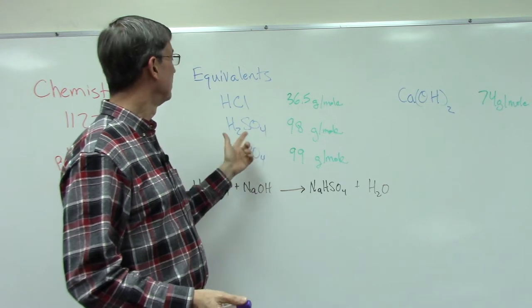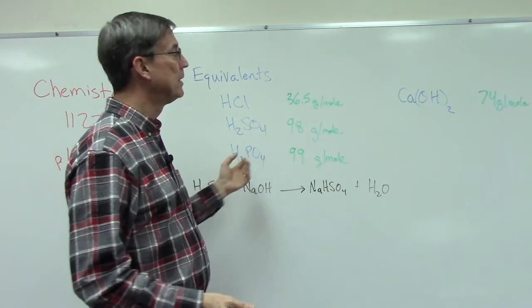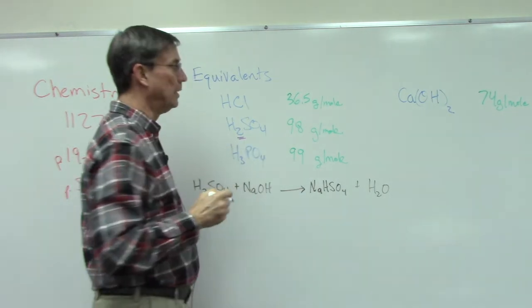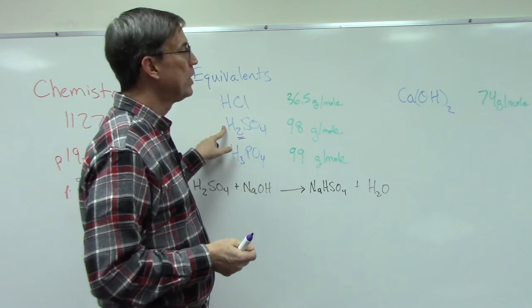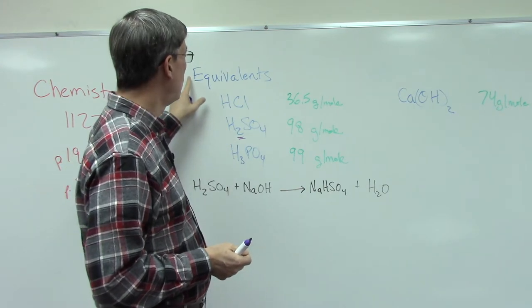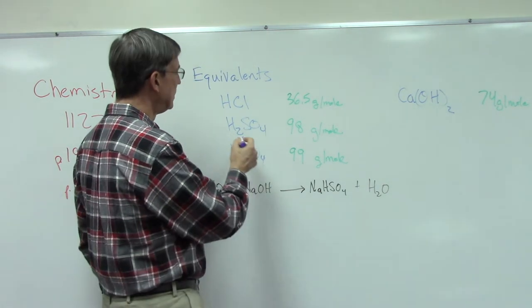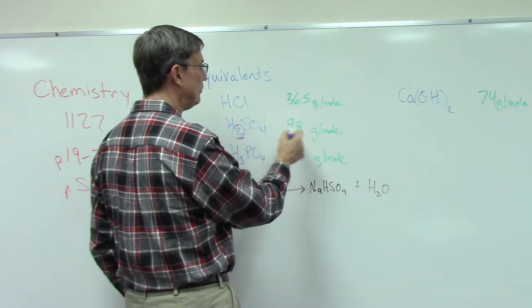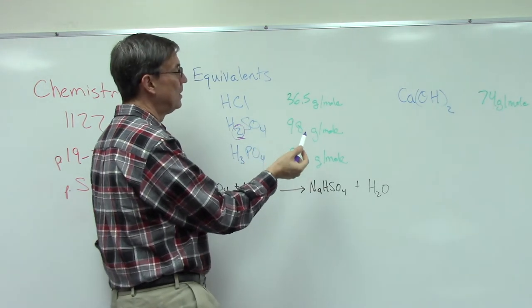So we call that two equivalents. For every one mole of this acid, we have the equivalent of two moles of hydrogen. What that means is, if one mole of H2SO4 is 98 grams per mole, then we really only need half of that. So you take 98 divided by 2, so 49 grams would be one equivalent.